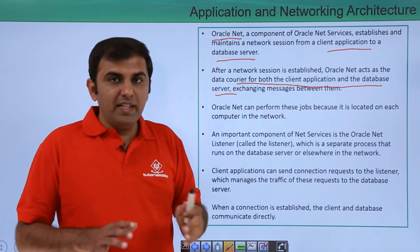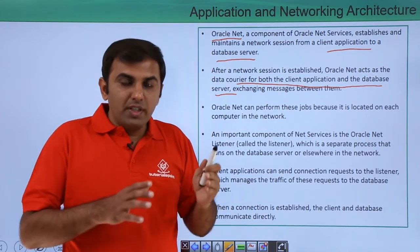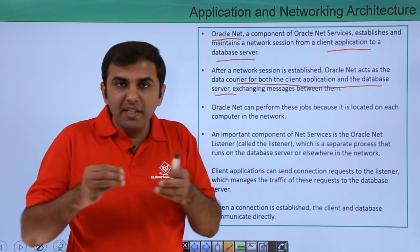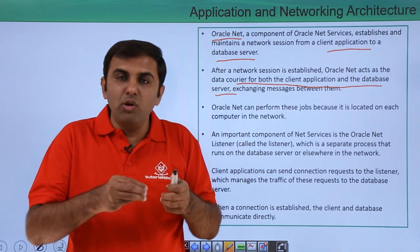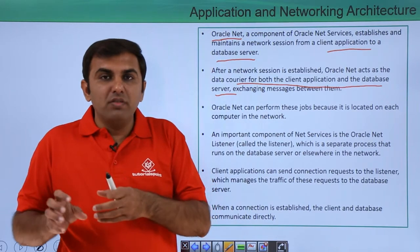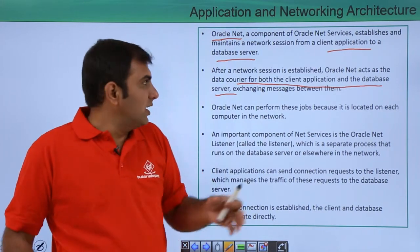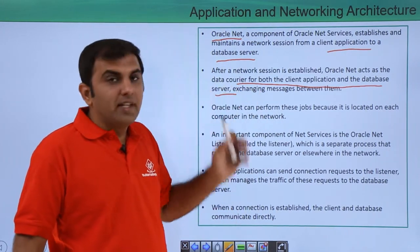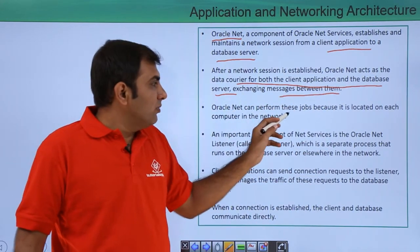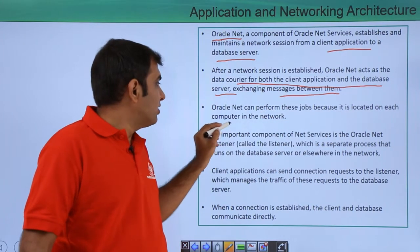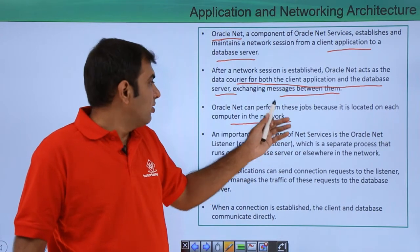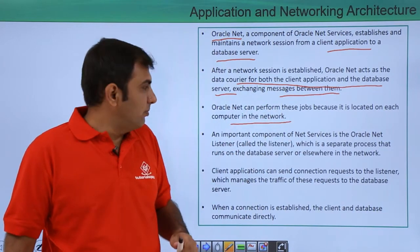Once the network is established, whatever the client is requesting, it sends data packets over the network to the server. The server collects that data and gives it back to the client over the network. So it works as a kind of data courier, exchanging messages between them. Oracle Net can perform this job because it is located on each computer in the network.